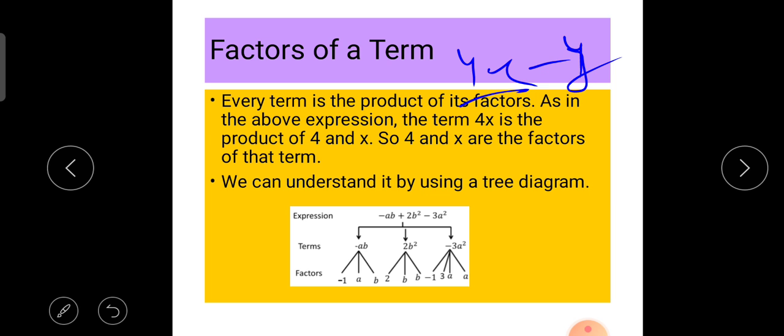Here, the expression -ab + 2b² - 3a² has three terms: -ab, 2b², and -3a². The term -ab has three factors: -1, a, and b. The term 2b² has three factors: 2, b, and b. Again, -3a² has four factors: -1, 3, a, and a. So these are the factors of each term, and this whole thing is called a tree diagram.